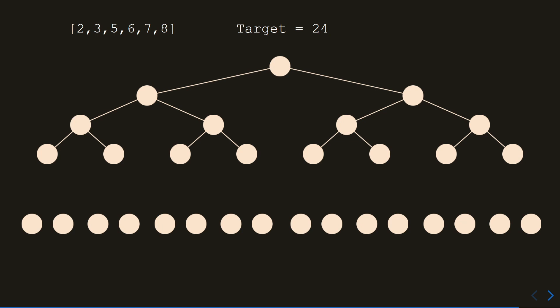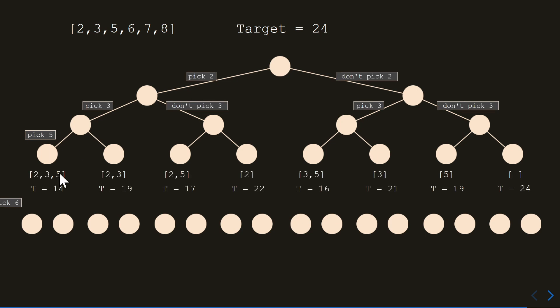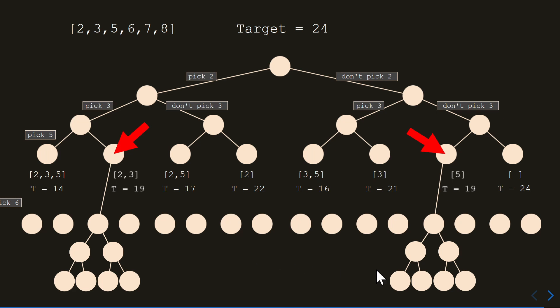Here's another example: the array is {2, 3, 5, 6, 7, 8} and the target is 24. After considering three numbers, you can see an overlap — in both cases we have sum 5 so far, meaning we need to make 19. From that point on we ask: can I use 6, 7, and 8 to make 19? The answer is false — you can't make 19 from {6, 7, 8}. Once you know this from the first occurrence, when you encounter the same subproblem again, you already know the answer is false, so there's no point going through all those nodes again. That's how we find savings with dynamic programming.